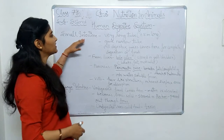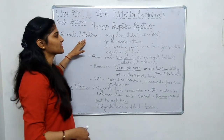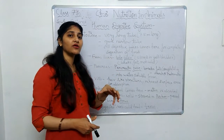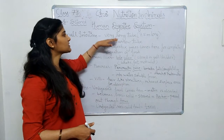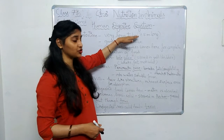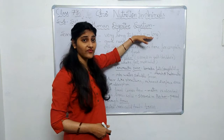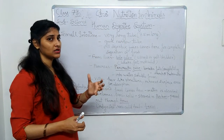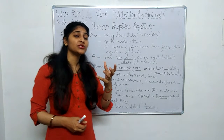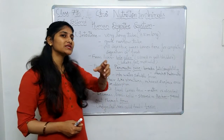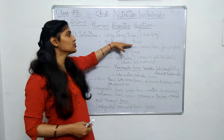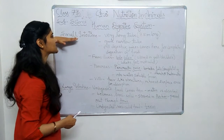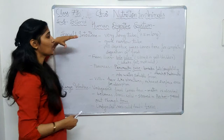Let us now understand the small intestine. It is a very long tube, like the pipes you see at home. It is about 7.5 meters long. Since it is a very narrow tube, similar to the narrow pipes used for taps, it is called the small intestine because of this narrowness.